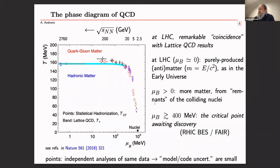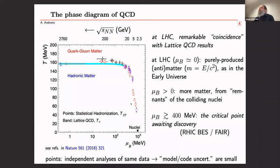In the T–mu_b plane, the hadronic observables — the fits of hadronic yields — presumably delineate a border between quark-gluon matter and hadronic matter. Certainly for low mu_b, this seems to be the case by comparison with what lattice QCD tells us. What happens at high mu_b is still an open question. You also see here several model incarnations doing essentially the same calculations with small variations, and the model or code uncertainty is in fact quite small.